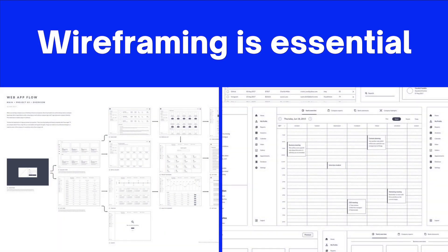The aim of a wireframe is to provide a visual understanding of a page early in a project, to get clients and the project team's approval before the creative phase gets underway — that would be the design phase and the further stages. Wireframes can also be used to create the global and secondary navigation to ensure the terminology and structure used for the site or app meets user expectations.